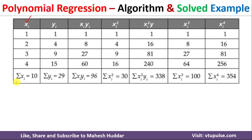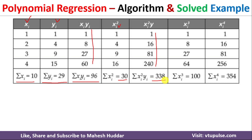Add all the xi values to get Σxi, and all yi values to get Σyi. Then multiply xi by yi to get the xi·yi column and sum it to get Σxi·yi. Calculate xi² to get Σxi². Also calculate xi²·yi and sum it. Similarly, compute xi³ and xi⁴ to get their summations.